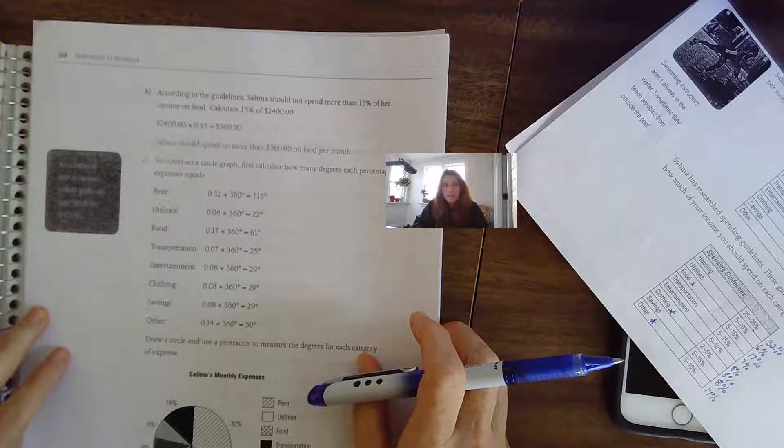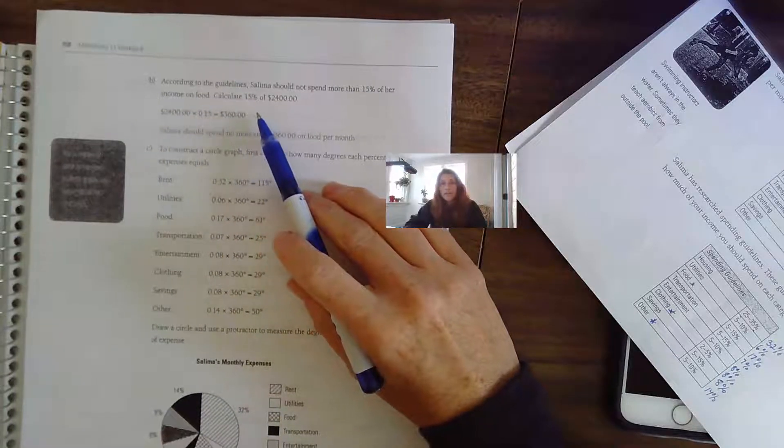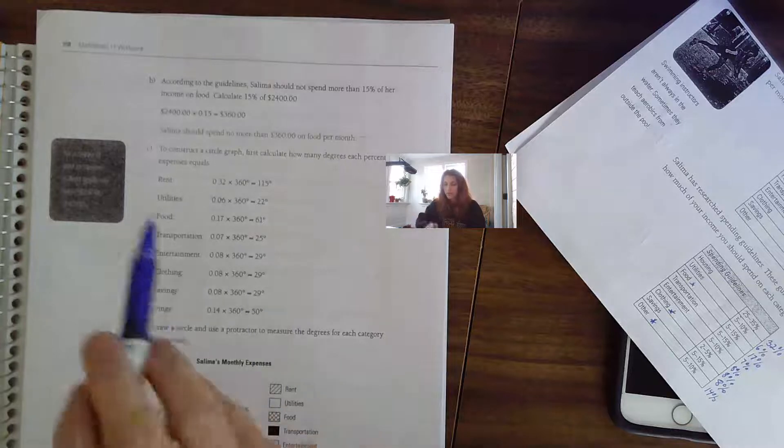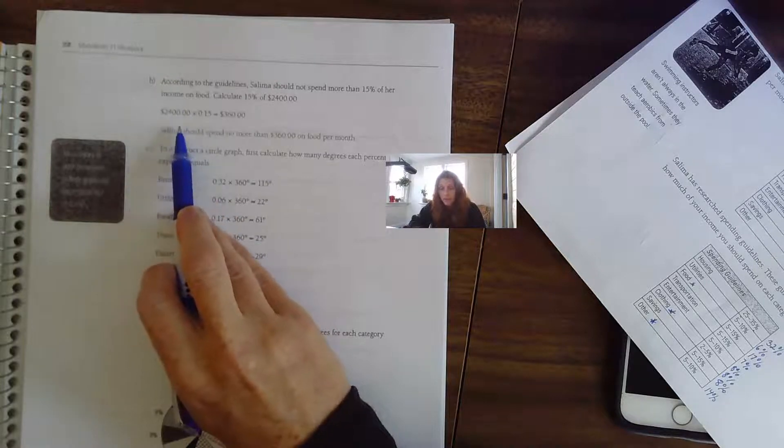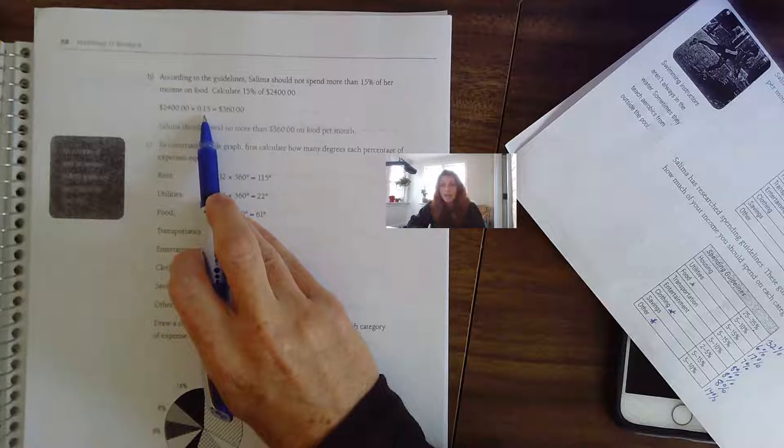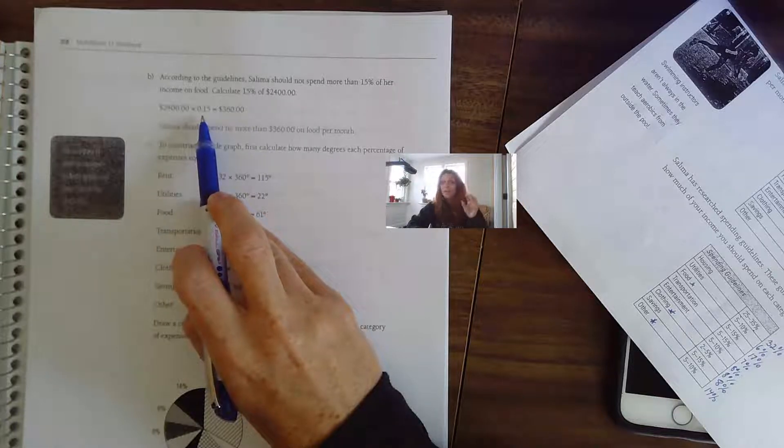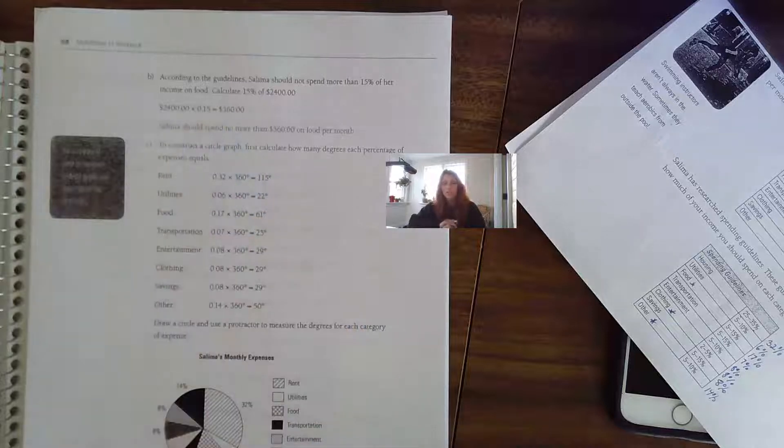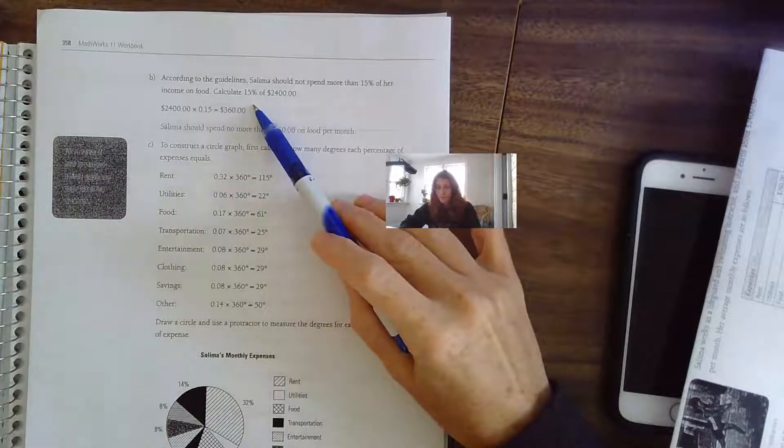So that is how you figure out what percentage it is that you've spent. We've looked at the guidelines. According to the guidelines, Salima should not spend more than 15% of her income on food. Calculate 15% of $2,400. Well, right here we have it. You take the amount of money, $2,400, and we're going to find 15% of that. When we hear the word 'of,' we think multiply. Multiply, $360. She should be spending $360 on her food.